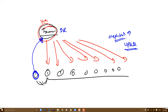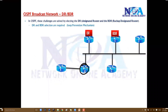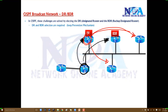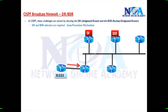Other routers are just neighbors but don't exchange information directly between themselves. Whenever any router receives an update, it sends the update to the DR and BDR. The DR takes responsibility for sending the update back to every other router. BDR is idle — it only takes over the DR role if the DR goes down. Routers other than DR and BDR are called DR Others.